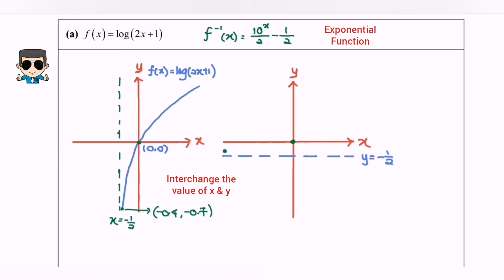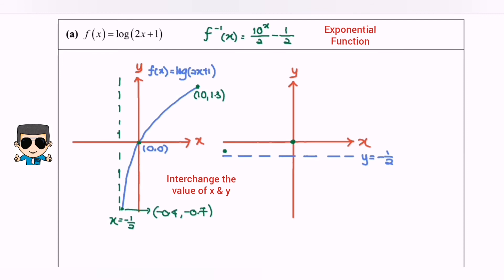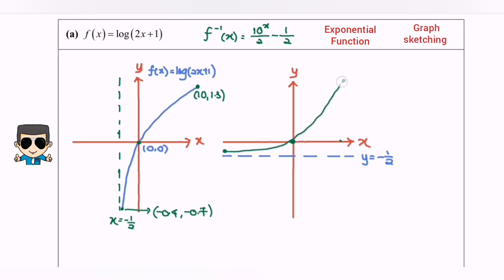Next we are going to find another value. Let's say the value is positive 10. So if the value of x is 10, the value for y will be 1.3. Do remember to interchange. So for the right hand side the value would be 1.3 and 10 — 1.3 is over here, 10 will be up here. So basically we already have the draft, and our graph will be something like this. That will be the graph for the function F inverse.